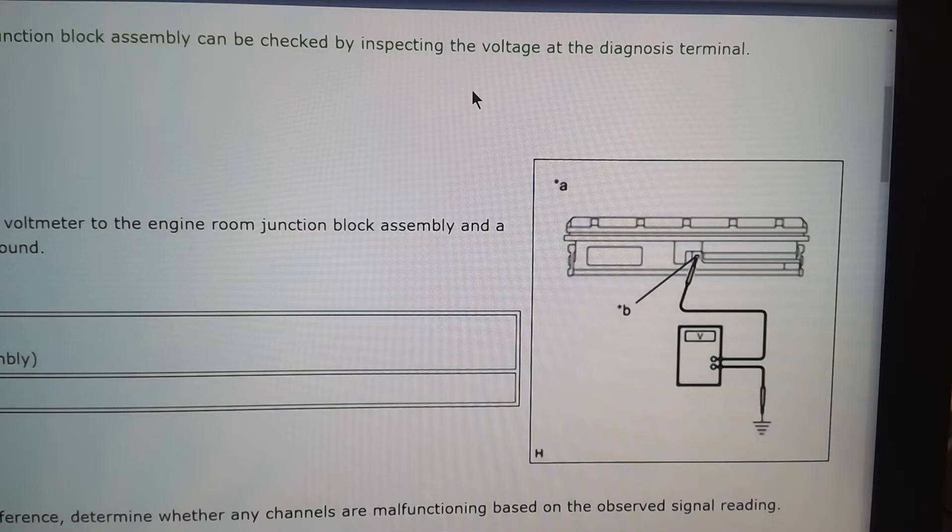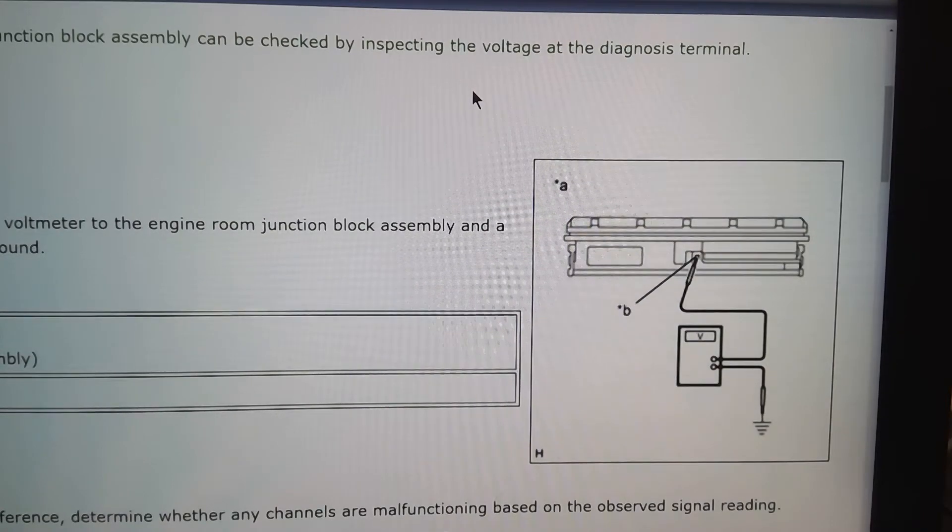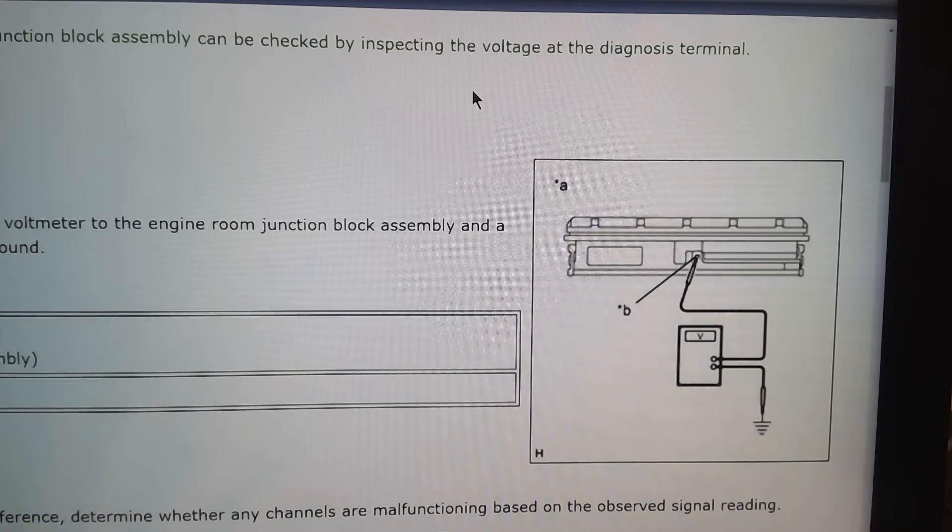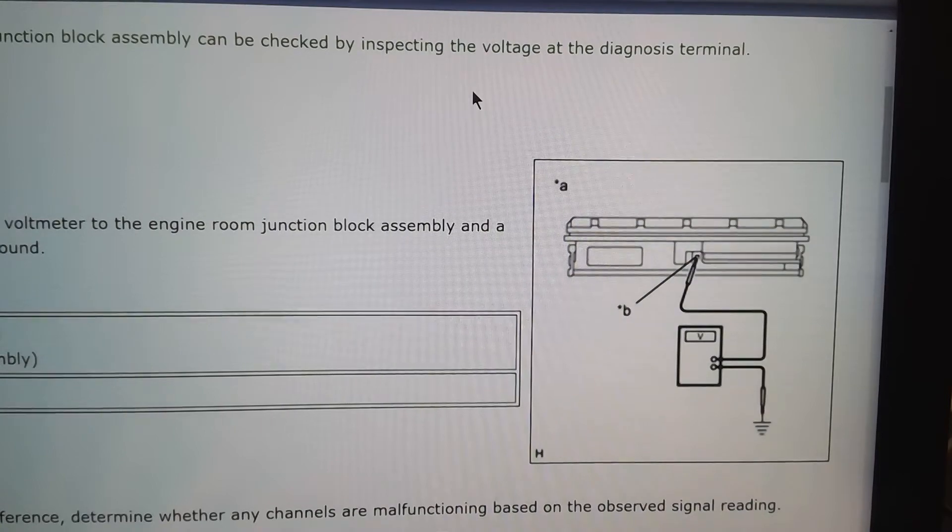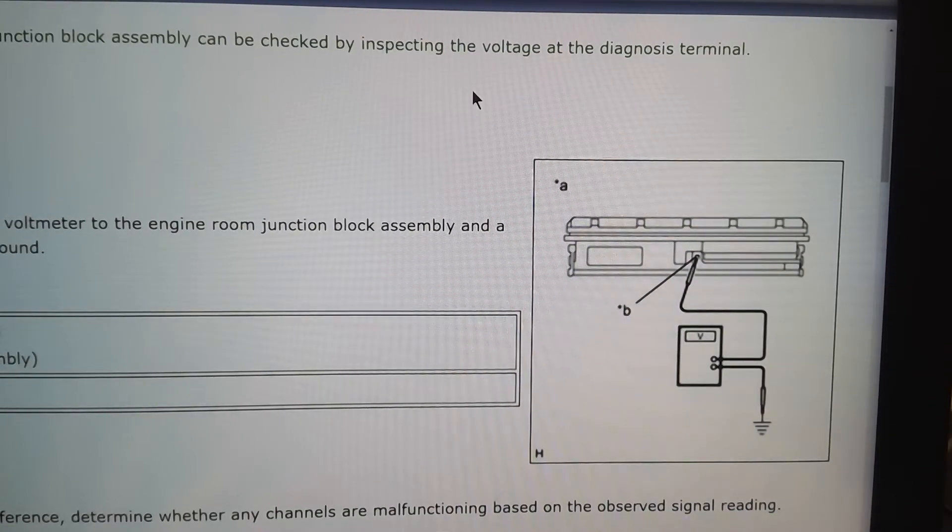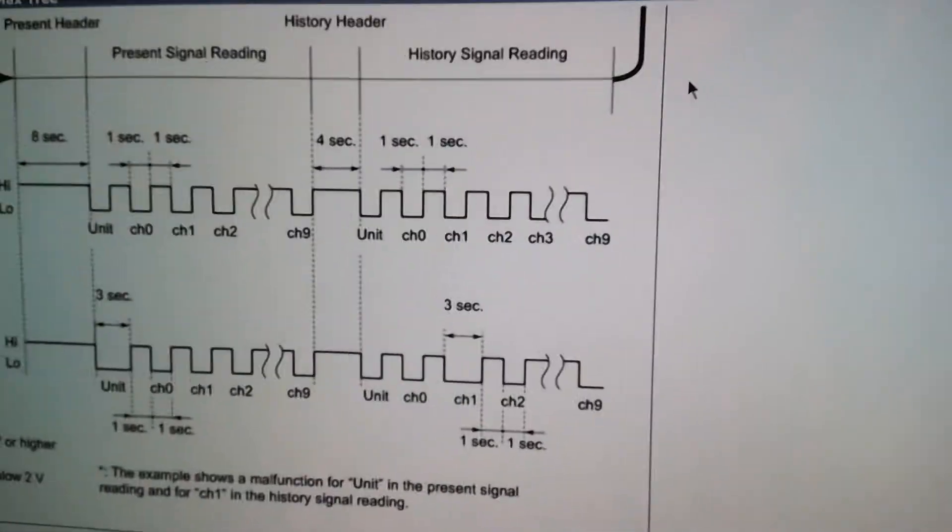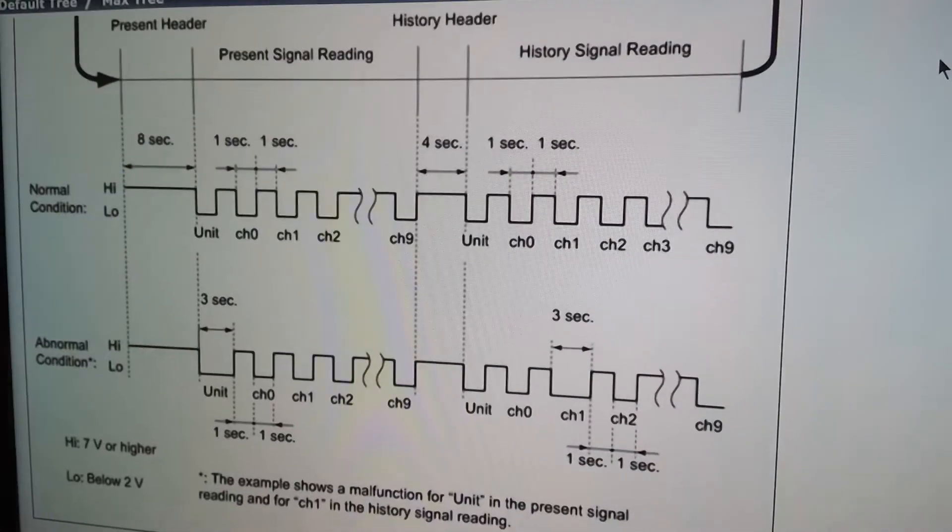Okay T-technicians, we're going to take a look at the integration relay. It actually is a really smart relay that will show us where there's a problem on what channel, and it does its own self-check. These are in the engine room junction block, and it kind of works like old school codes if you've ever pulled flash codes from an old vehicle.